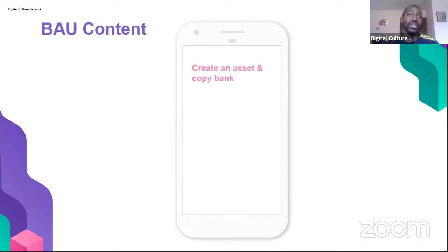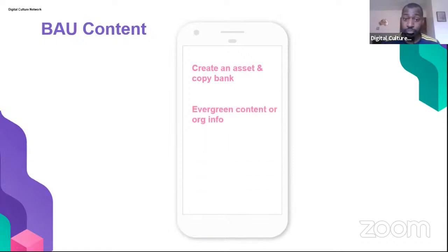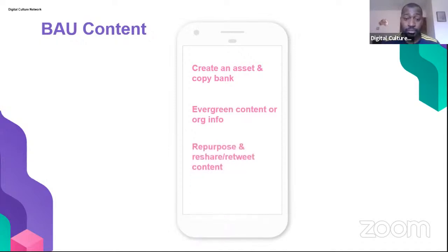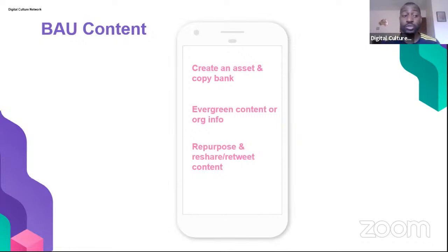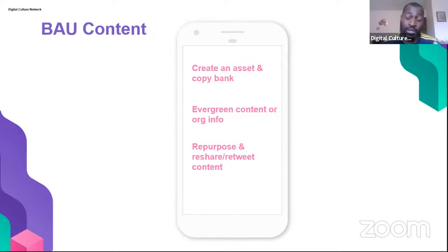Business as usual content is evergreen content or organization information — something easy to do that gives you consistency. Create an asset and copy bank of evergreen content and organizational information. Twitter also allows you to retweet and reshare content. If a piece of content has done well or has been shared by a larger account giving high impressions but low organic reach — meaning much of your audience hasn't seen it — that's another reason to reshare or retweet it.